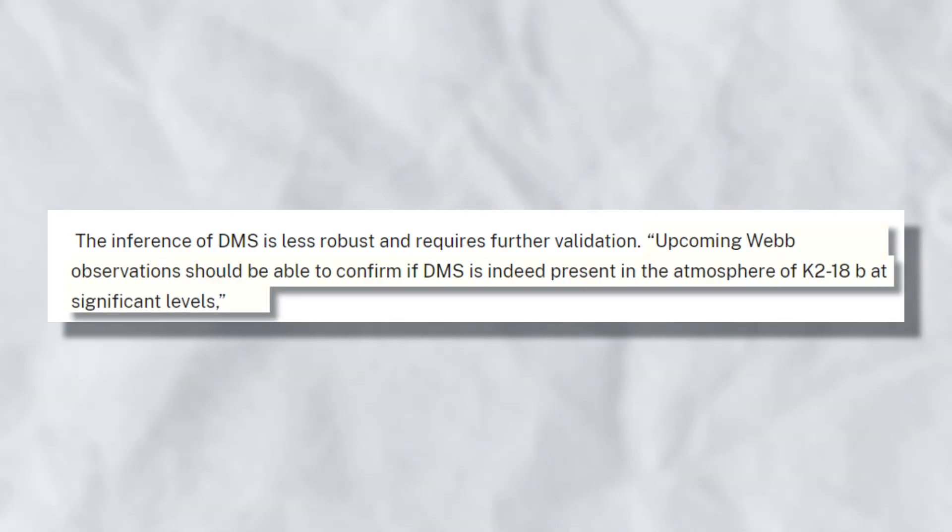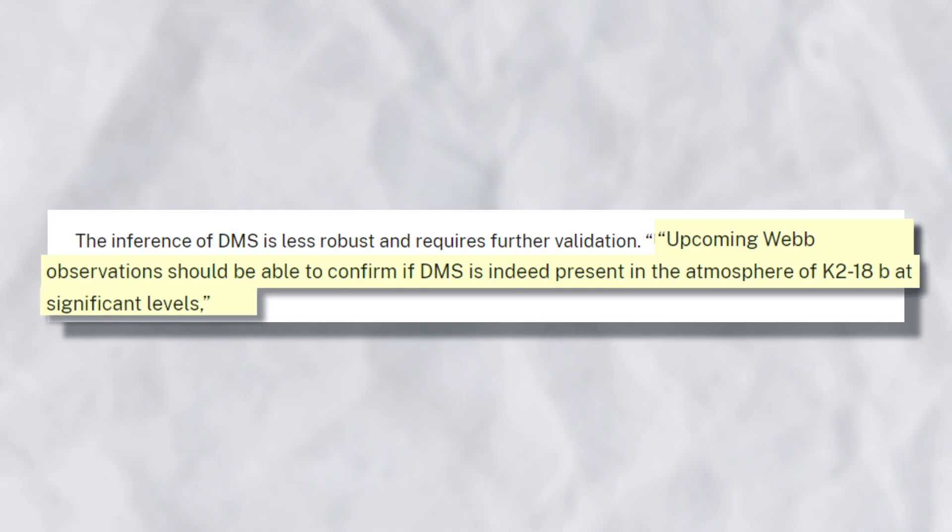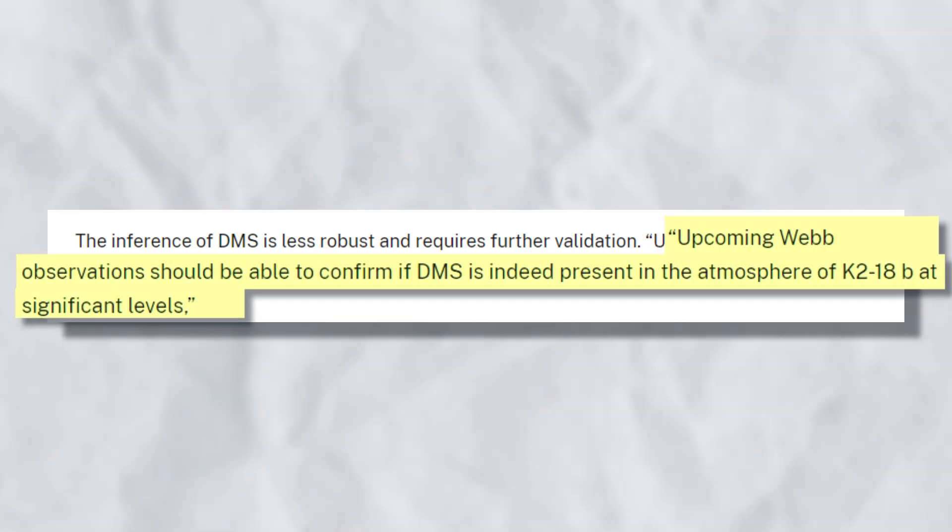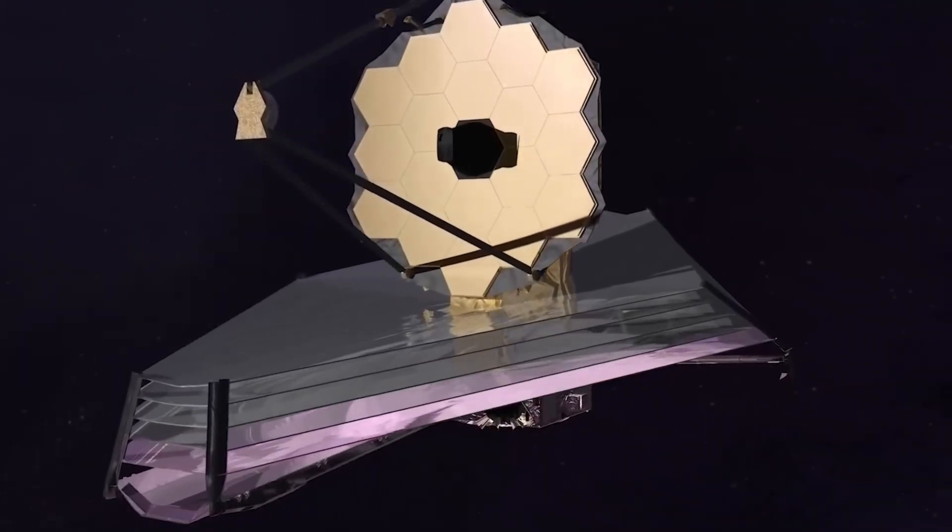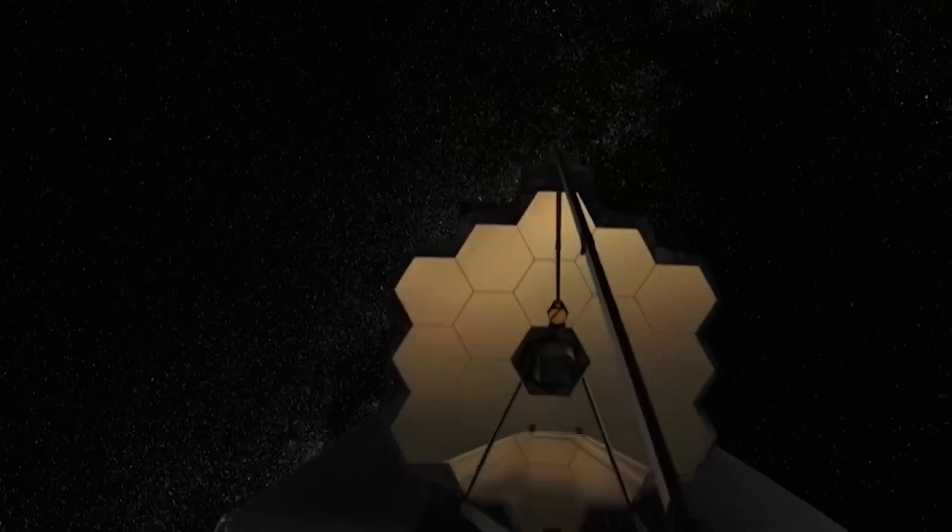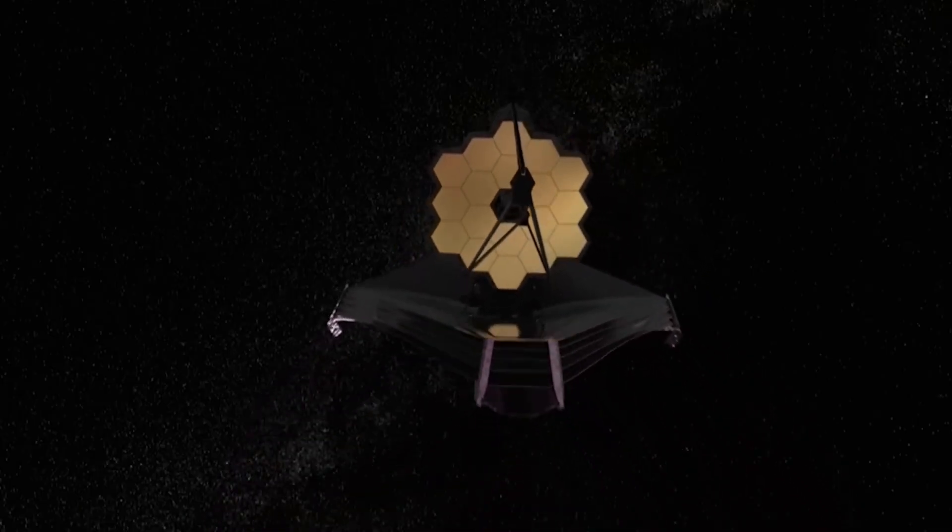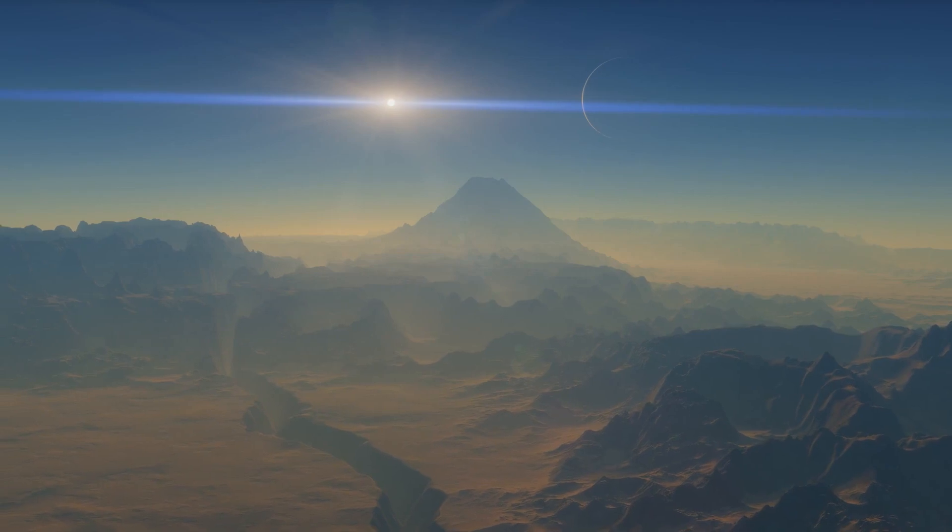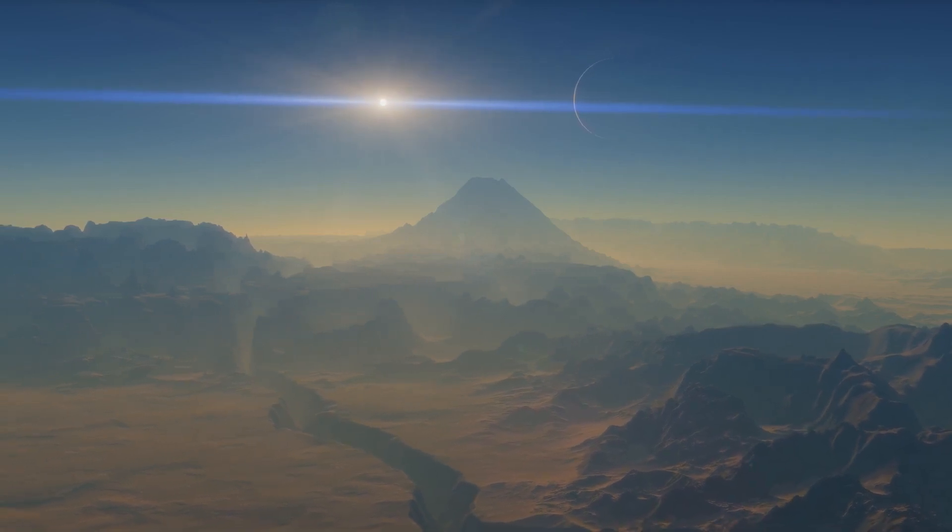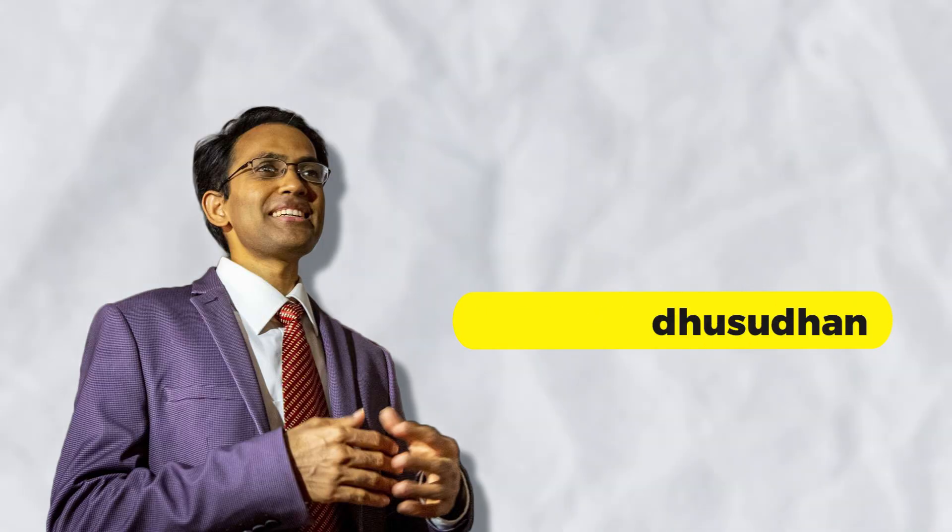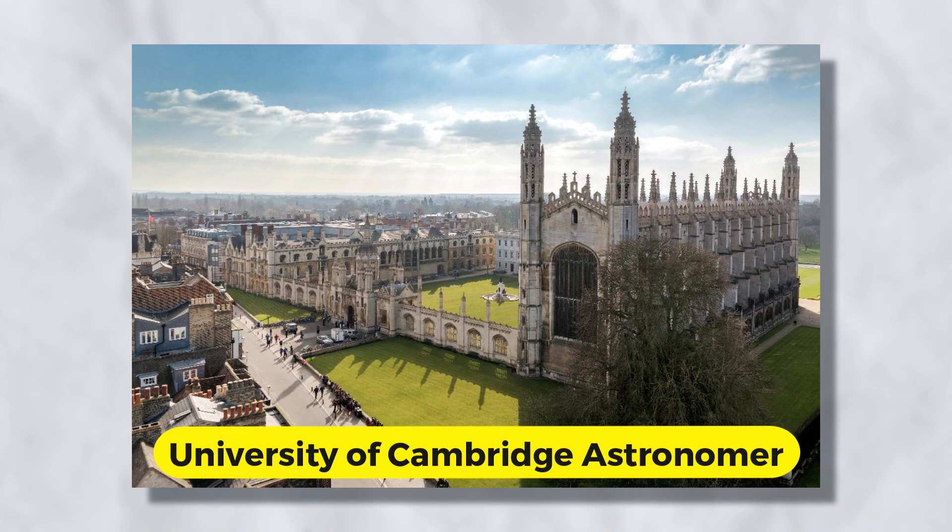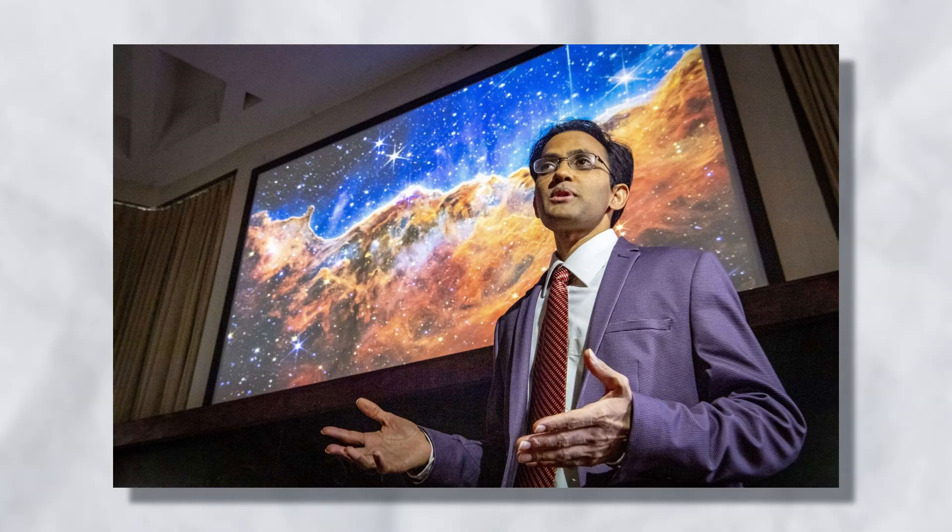The assertion regarding its presence on K218b needs concrete and further validation. The presence of DMS requires further investigation. Upcoming James Webb Space Telescope observations should be able to confirm if DMS is indeed present in the atmosphere of K218b at significant levels, said Niku Marusudhan, a University of Cambridge astronomer and lead author of the NASA Research.